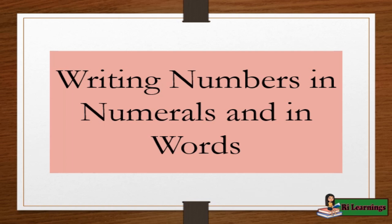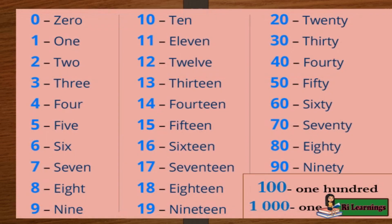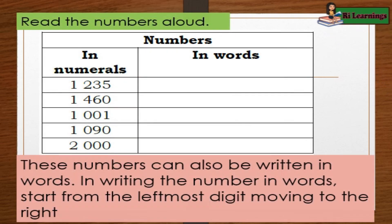Writing numbers in numerals and in words. Study the chart. Read the numbers aloud: 1,235; 1,460; 1,001; 1,090; 2,000. These numbers can also be written in words. In writing a number in words, start from the leftmost digit moving to the right.